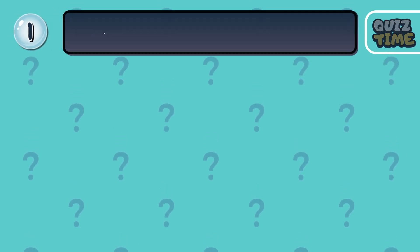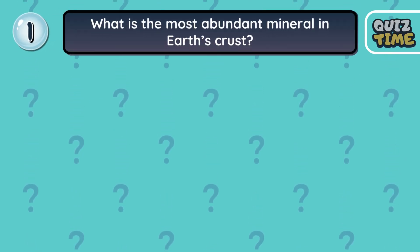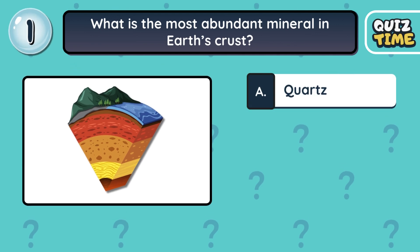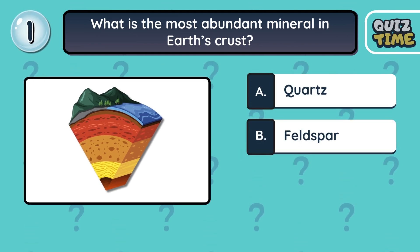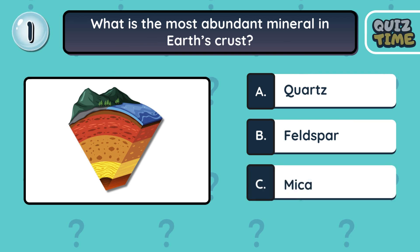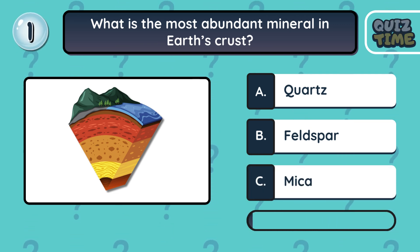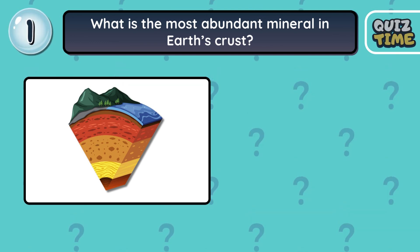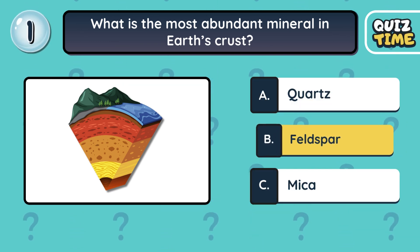Number 1. What is the most abundant mineral in Earth's crust? A. Quartz. B. Feldspar. C. Mica. The correct answer is B. Feldspar.